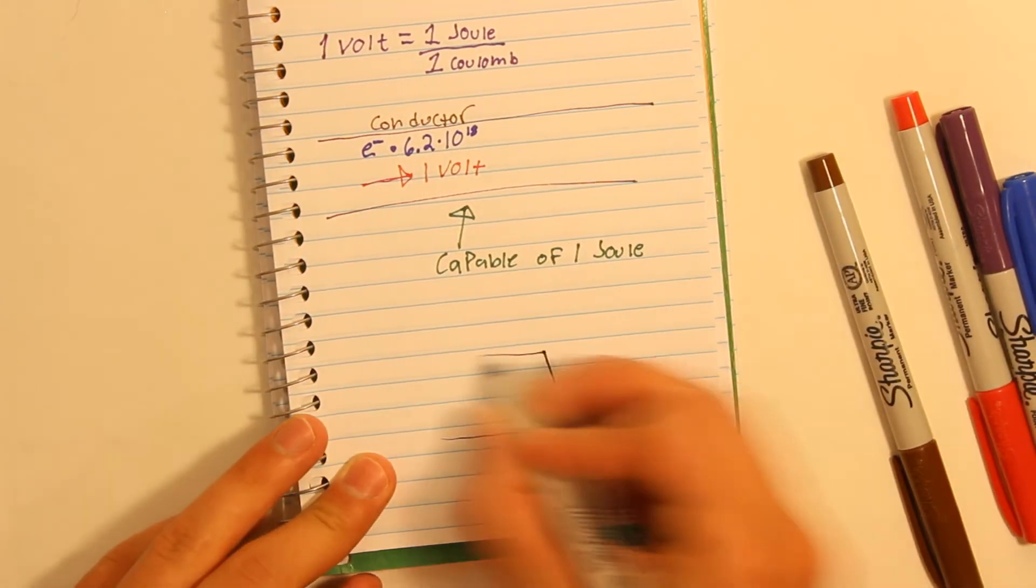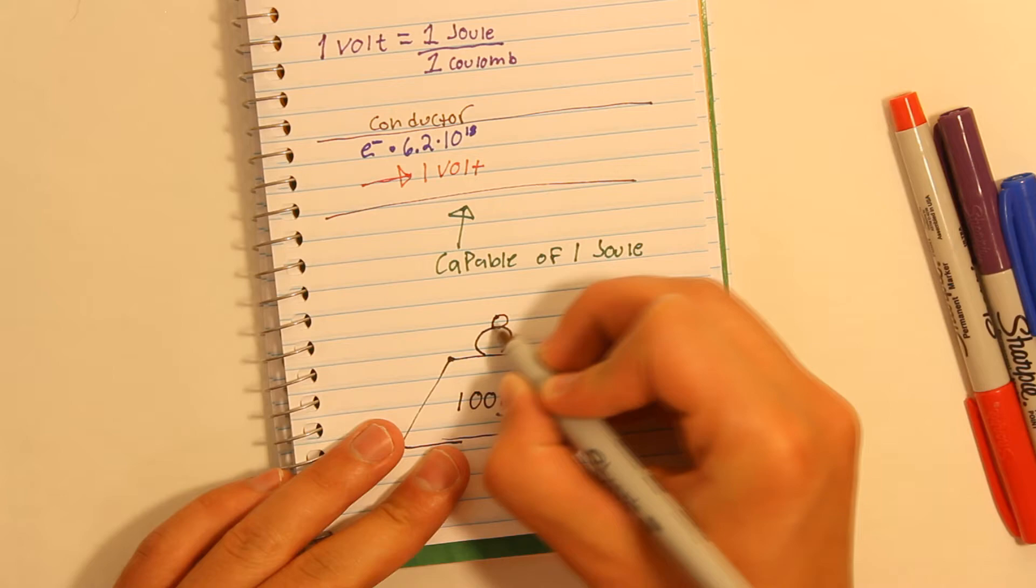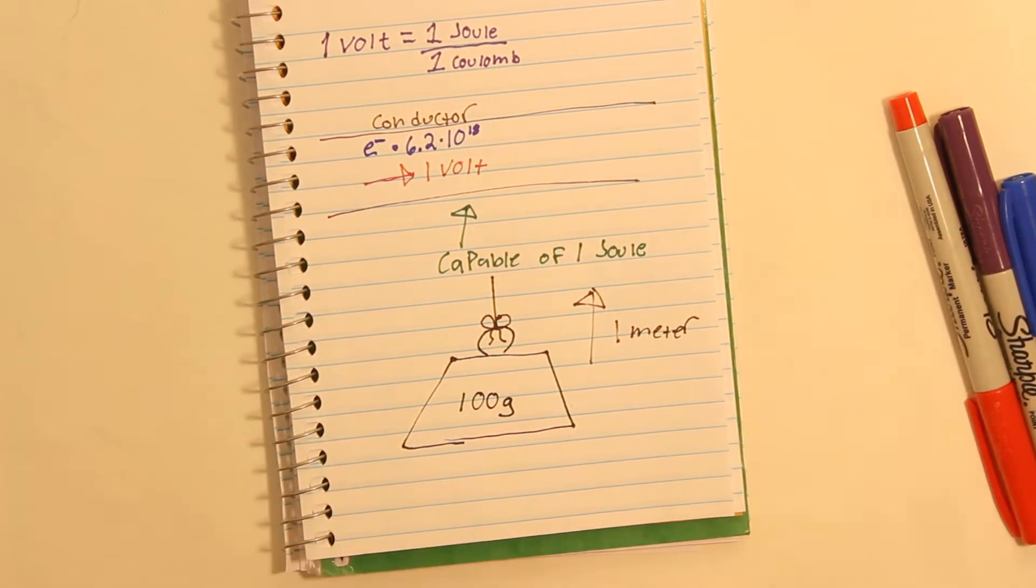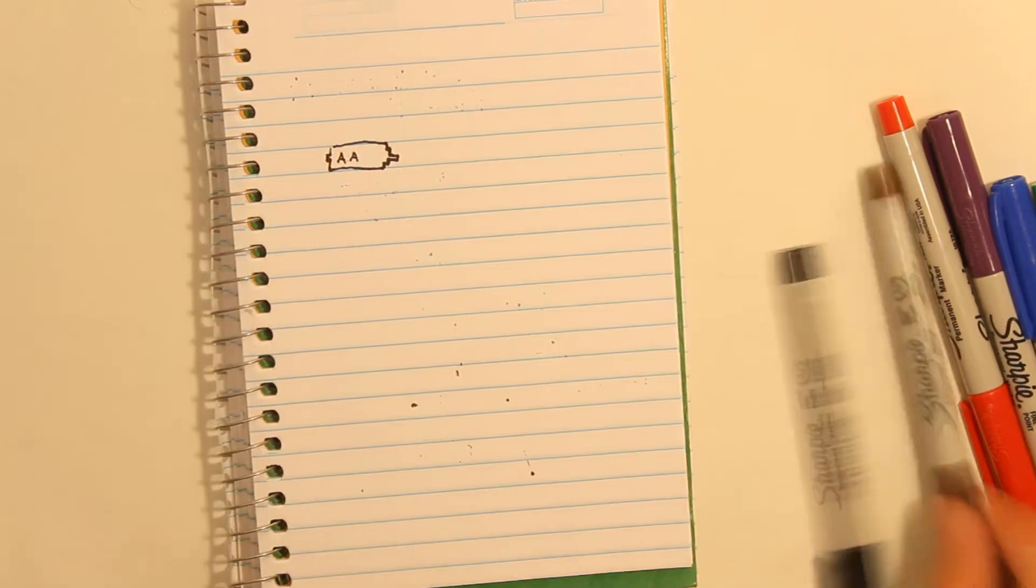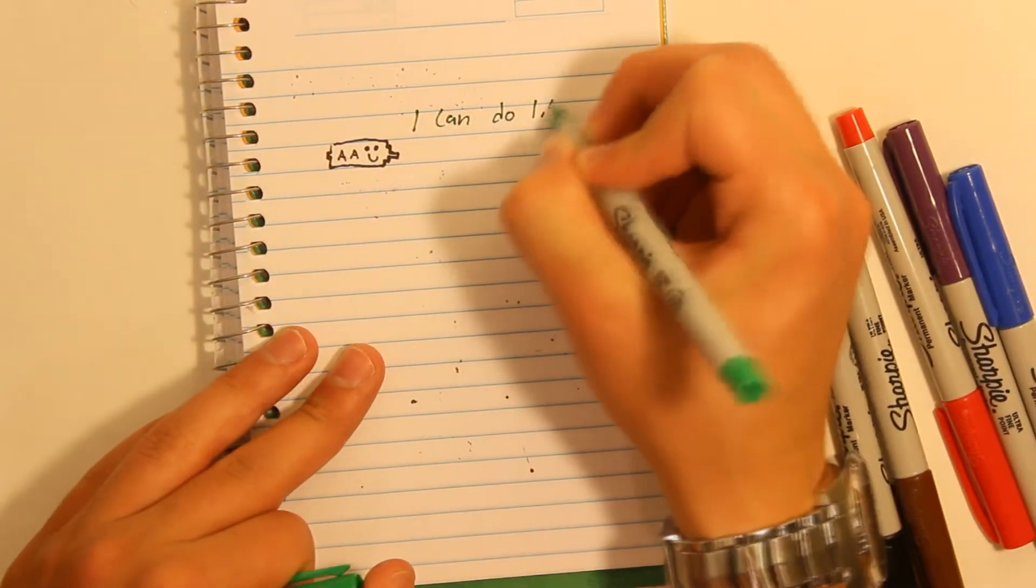If you do not know, one joule is the amount of energy it takes to raise 100 grams one meter. A 1.5 volt battery is capable of doing 1.5 joules of work per coulomb of atoms.